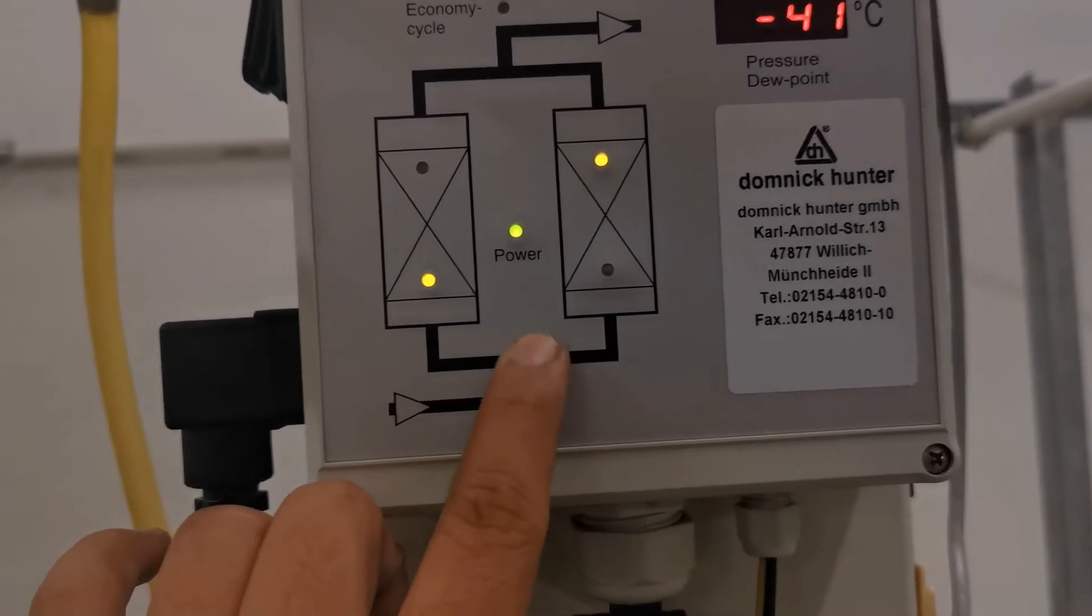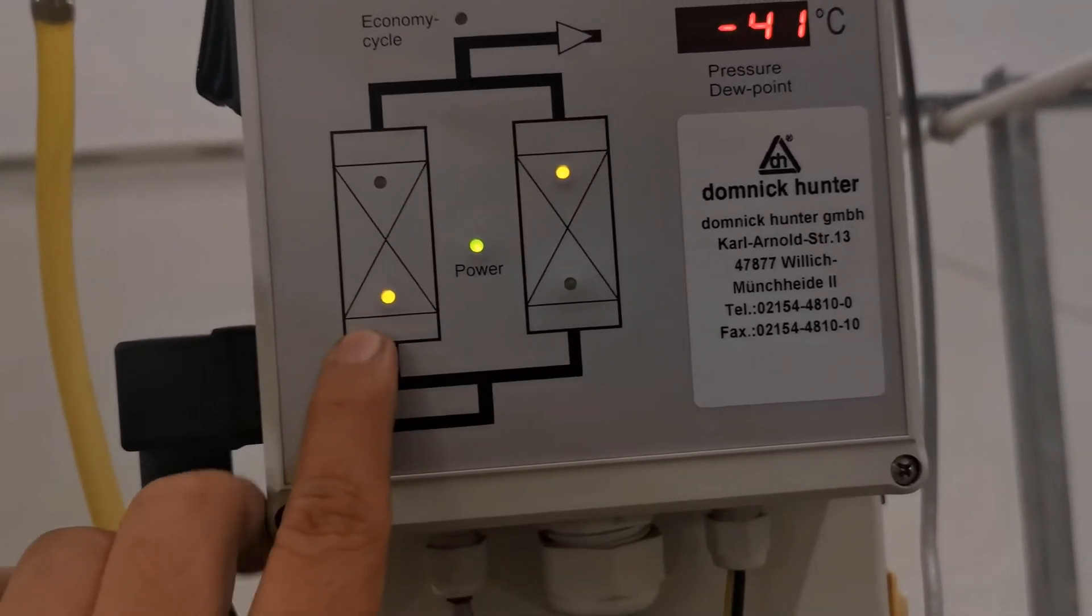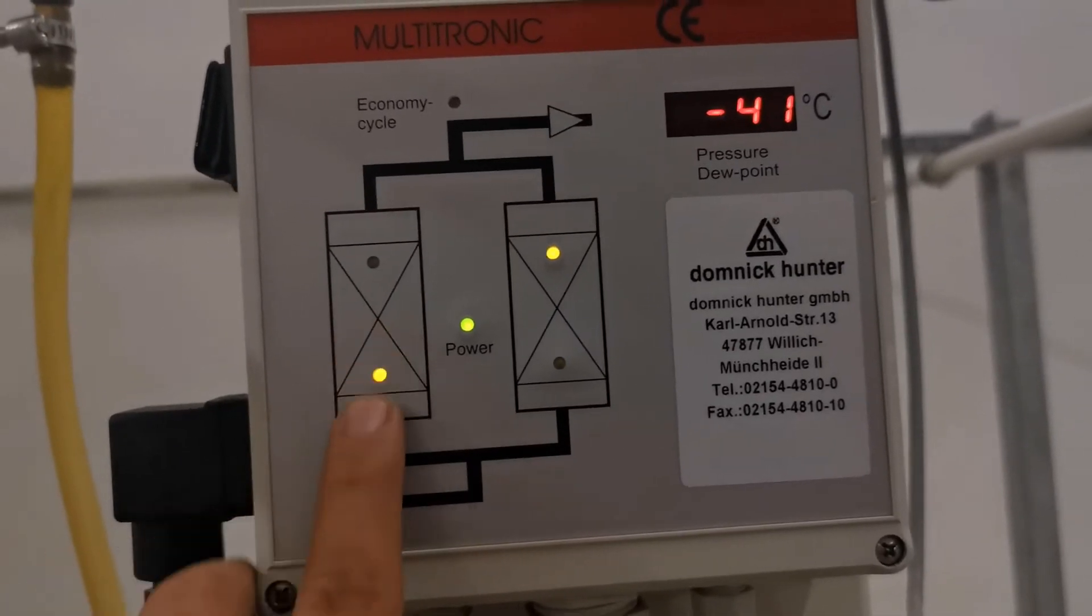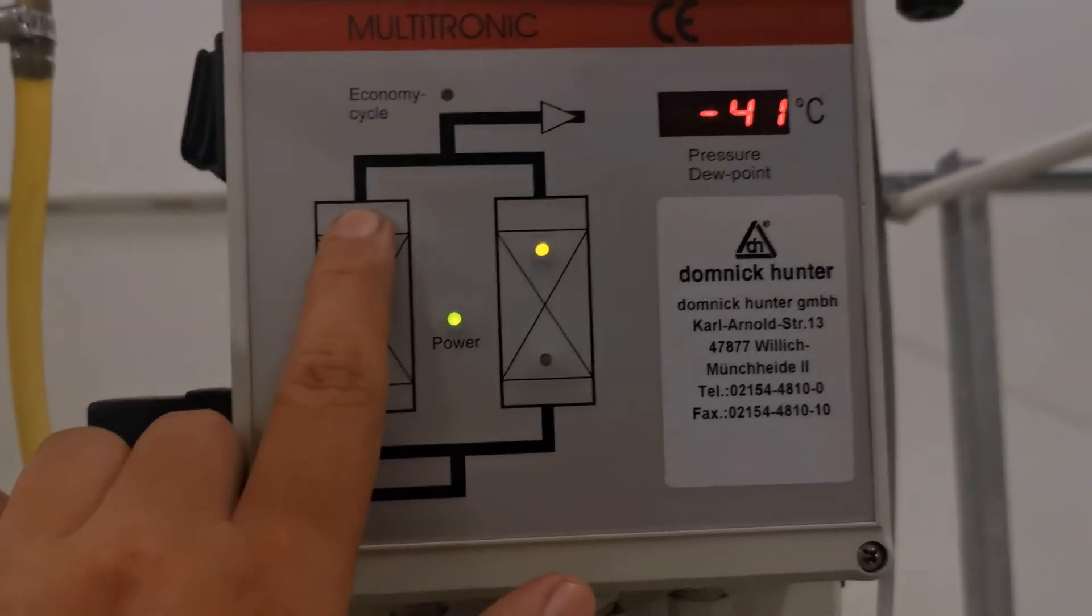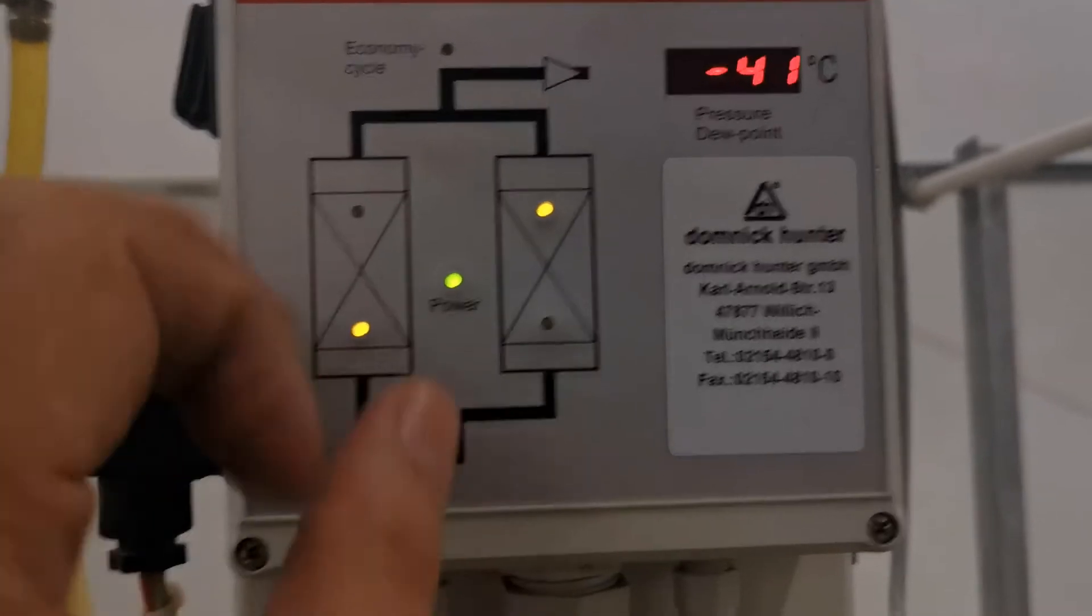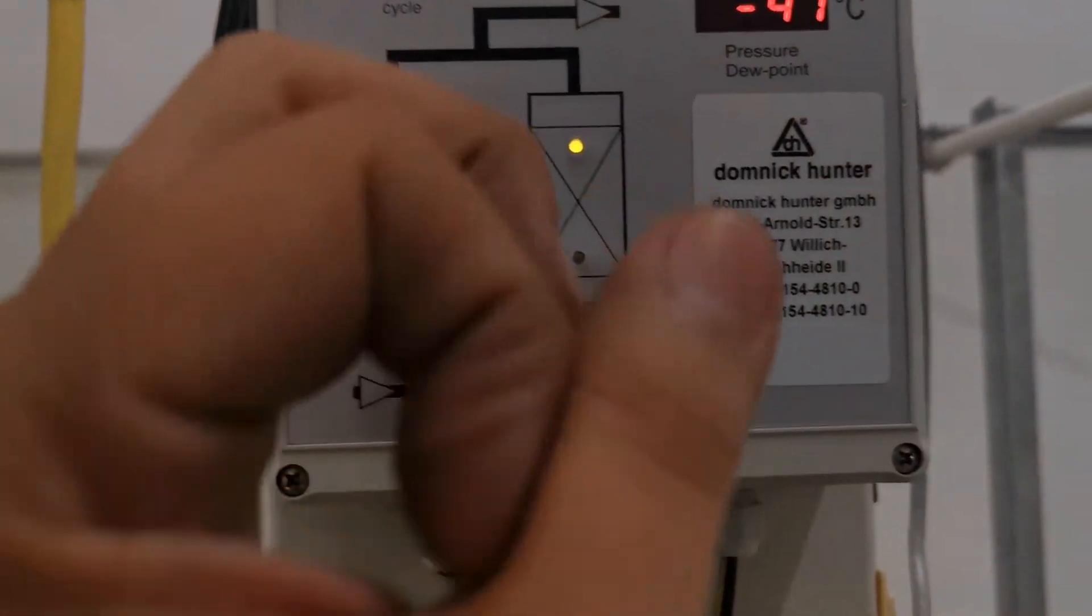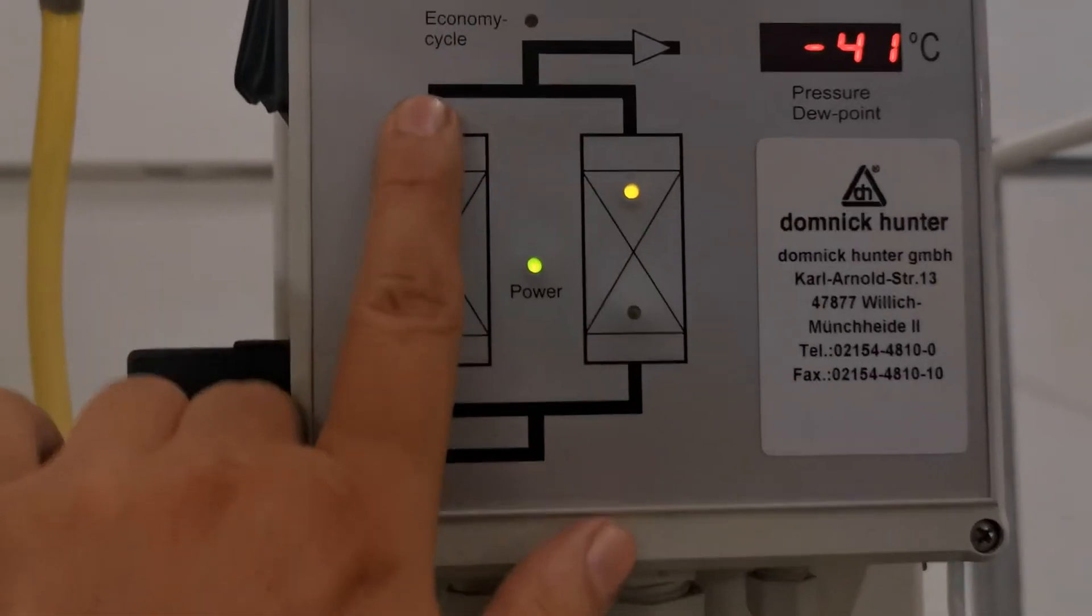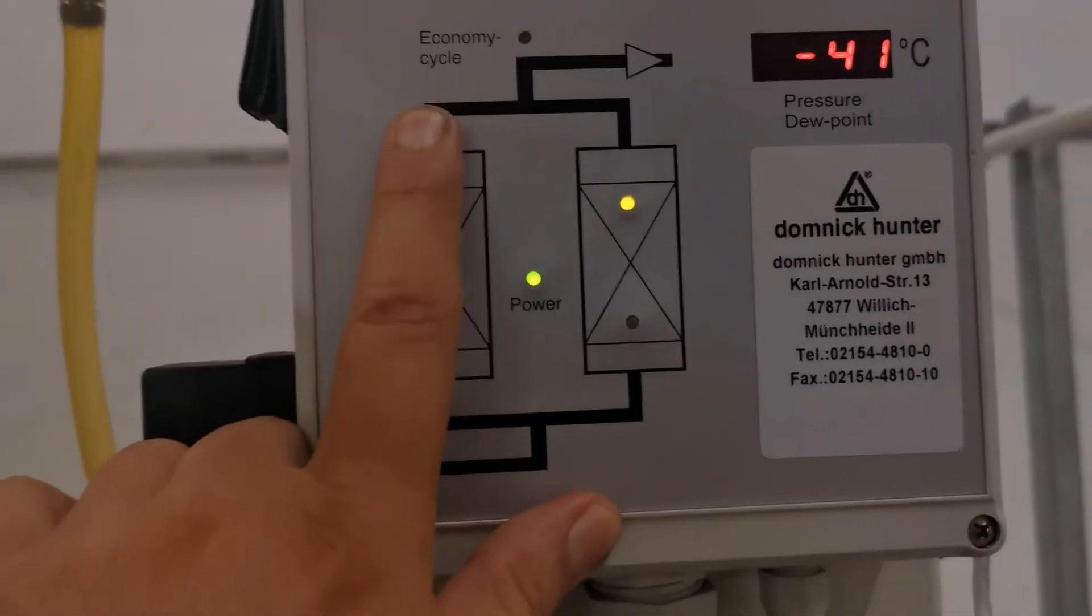It roughly works like this: compressed air goes into one of the chambers, passes through so the moisture gets collected, not absorbed but just collected on the outside of the aluminum ball, and passes out as dry air.